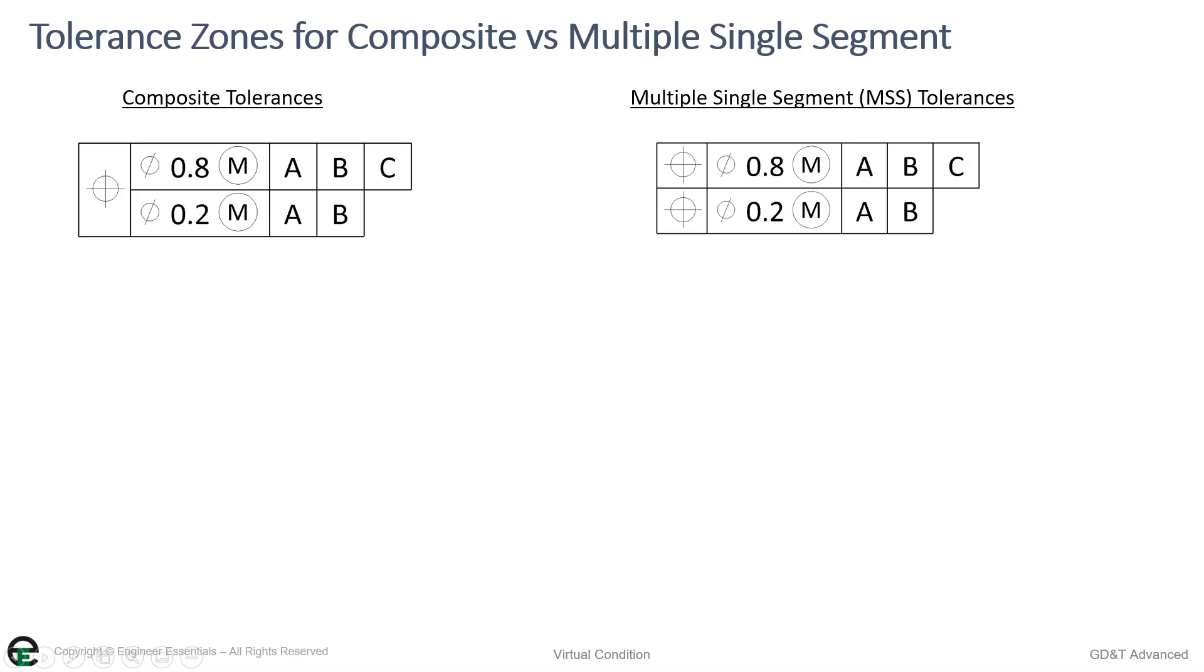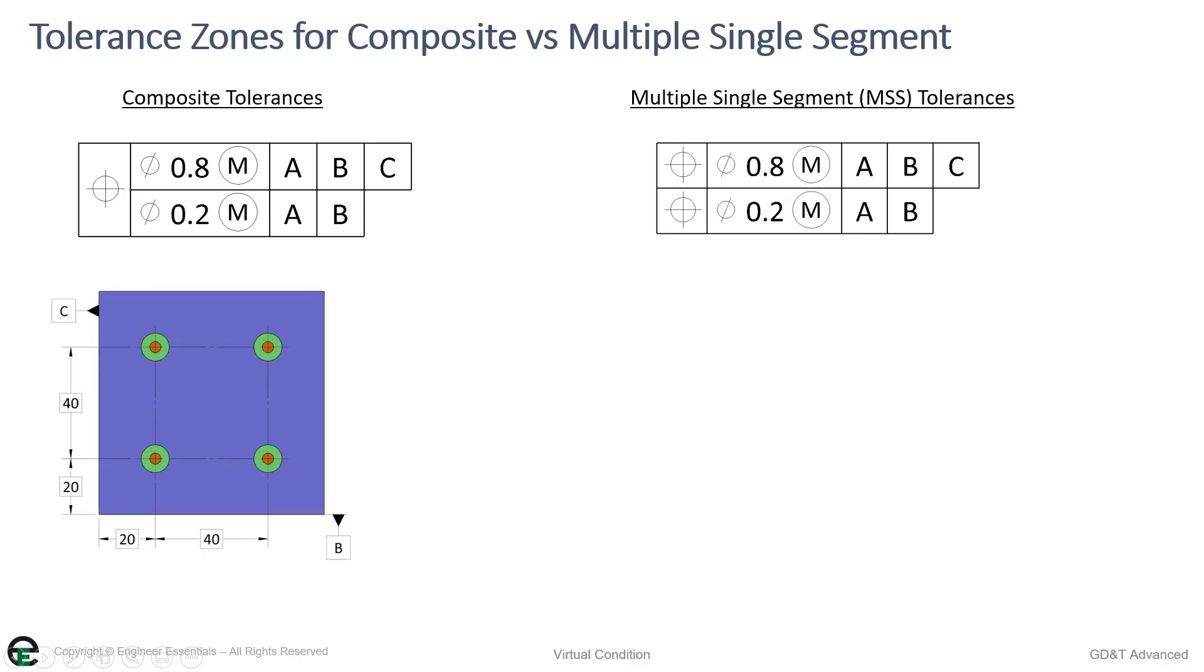And let's look here on this next slide here at what this means. So pulling up the two feature control frames like we saw before. One really for composite and two for multiple single segment, but the same feature control frames. Over here on the left is composite. We see that we have the green is the 0.8 tolerance zone. Now I'm not showing the holes on here. The green is the 0.8 tolerance zone for composite. The 0.2 is the red. That's the FRTZF. So that's inside of here.